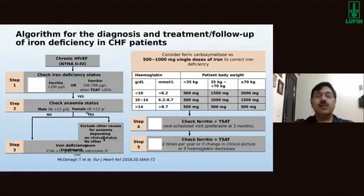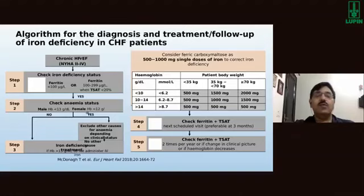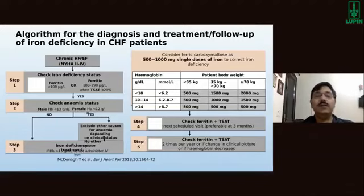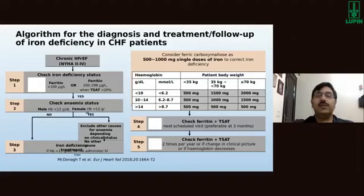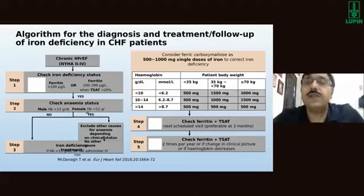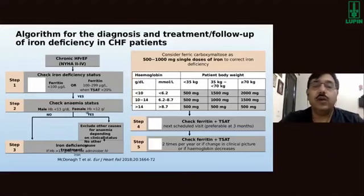An algorithm is available for diagnosis, treatment, and follow-up of iron deficiency. All HFrEF patients in NYHA Class 2 to 4 should have their iron deficiency status checked — ferritin less than 100, or ferritin less than 300 with TSAT less than 20%. Anemia status is assessed and iron deficiency is treated. A single dose of ferric carboxymaltose is given to correct iron, calculated based on body weight.